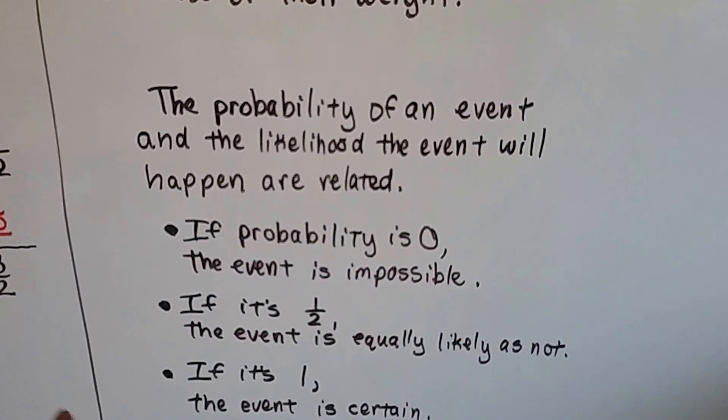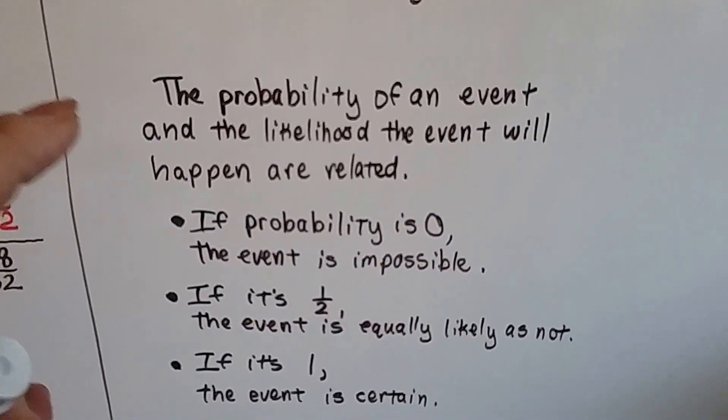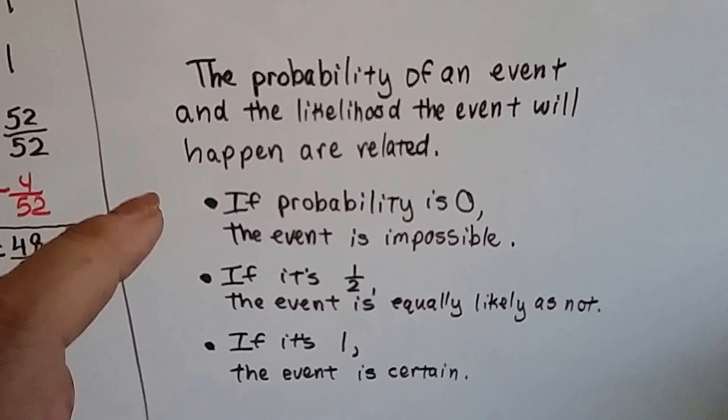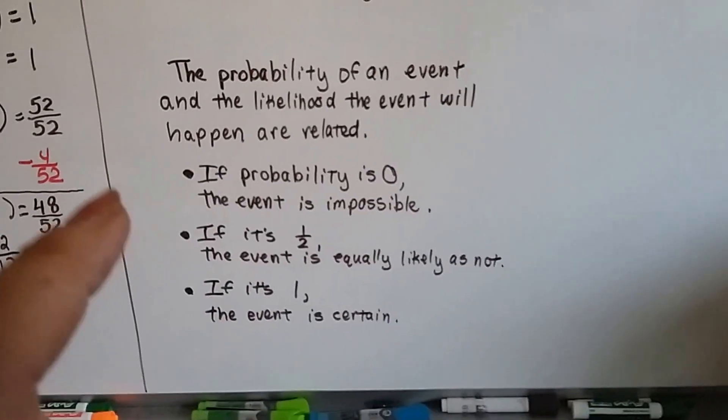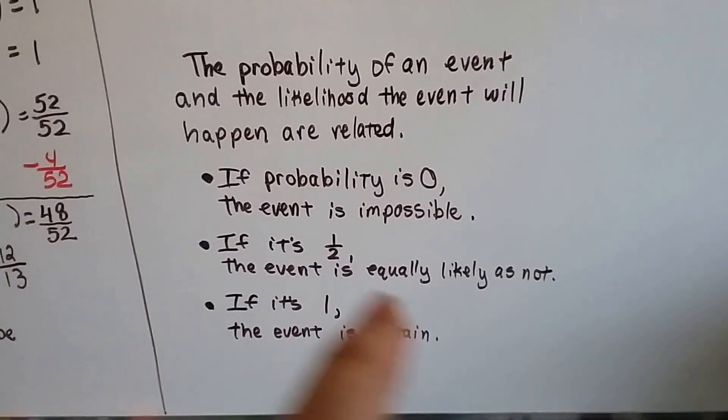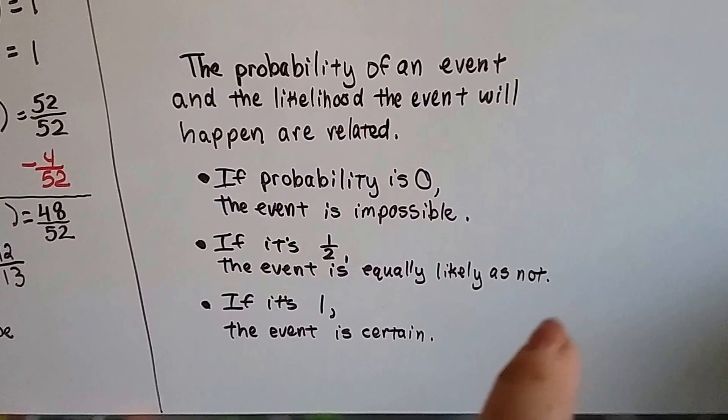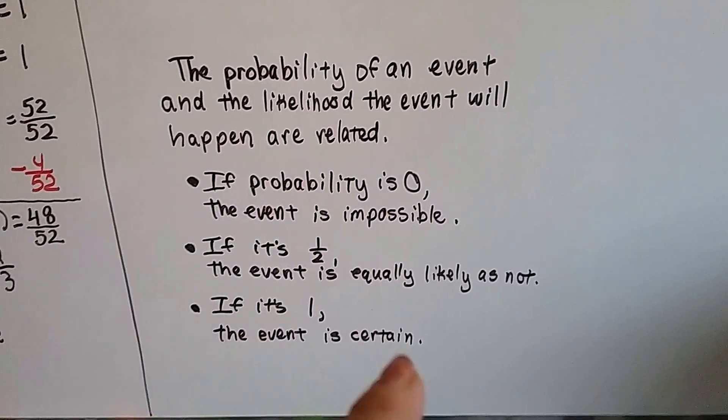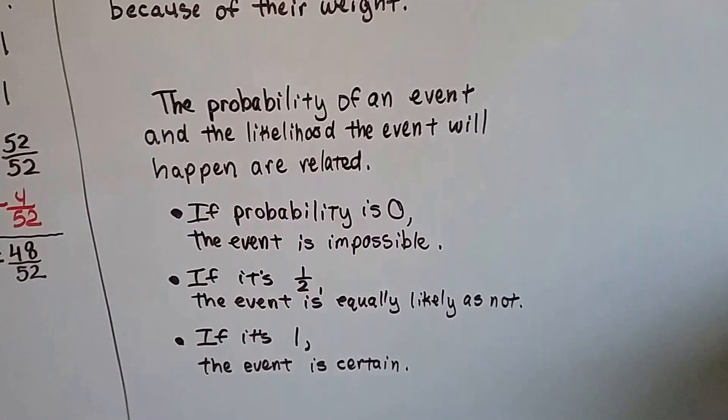The probability of an event and the likelihood the event will happen are related. If the probability is zero, the event is impossible. If it's one half, the event is equally likely as unlikely. If it's one, the event is certain.